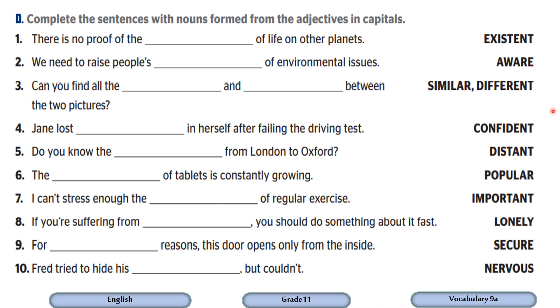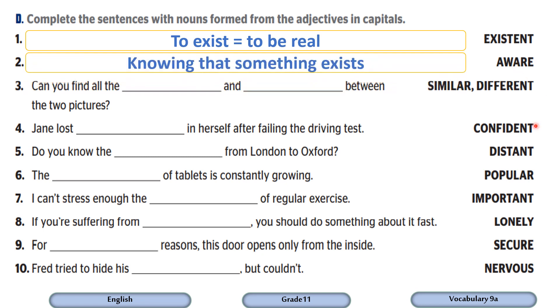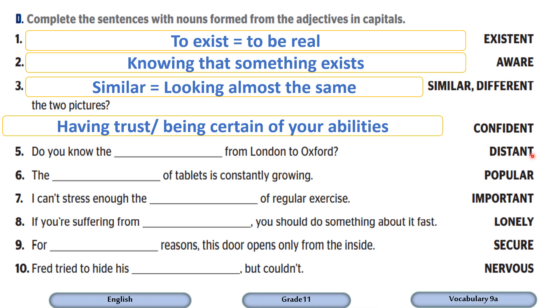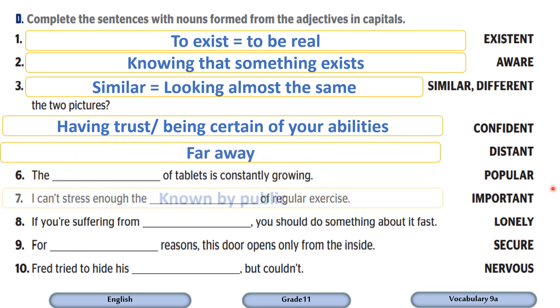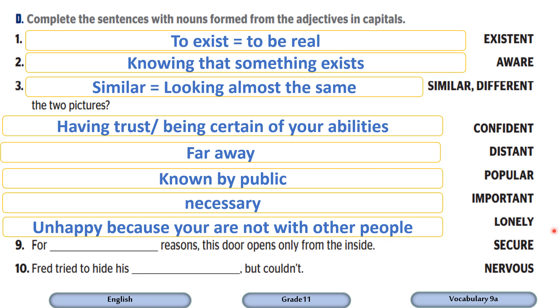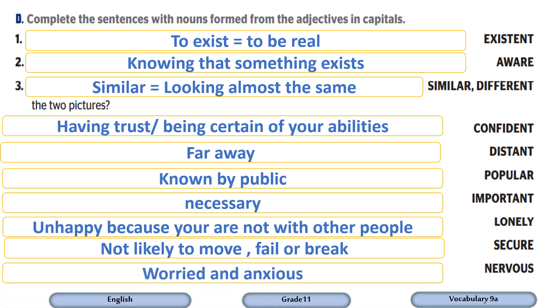We are going to display now definitions that are taken from the Cambridge Dictionary. First, we have the word existent, which is an adjective that means to be real. For example, aware - someone who is aware means he or she knows that something exists. Similar or different, similar means looking almost the same, and this is the antonym of different. Confident, having trust or being certain of your abilities when you trust your abilities. Distant means far away. Popular, something which is known by the public. Important, necessary. Lonely, when you feel unhappy because you are not with other people. Secure, a secure place is not likely to move, fail, or break. Nervous, when someone is worried or anxious.